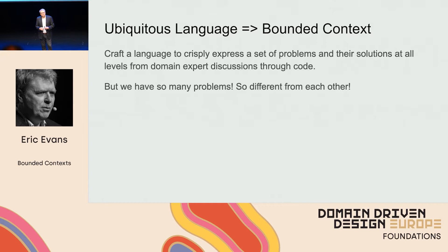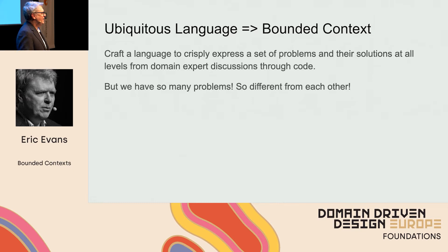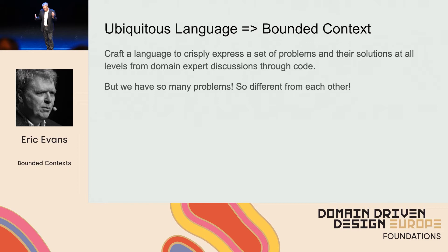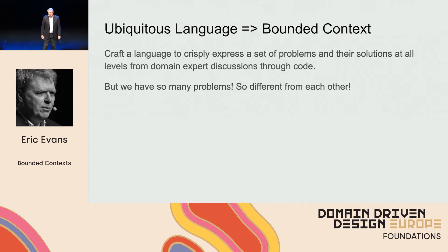When I say ubiquitous, I'm really talking about different aspects of software development — that the language would be involved in our conversations with domain experts, but also in our code at the two extremes. In the other dimension, for the many problems we're trying to address, we would not try to address them with the same model or describe them with the same language. To do that, you'd have to have a language as versatile as a natural language, and we don't want that.